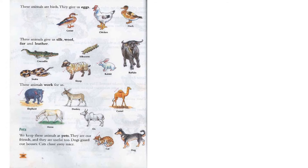Some animals work for us. In this picture, the elephant, donkey, camel, horse, and ox are used in our working procedures. If you want to do some kind of heavy work, we use the elephant, donkey, camel, horse, or ox. We also keep some animals as pets — they are our friends and are useful too. Dogs guard our houses, and cats chase away mice. We keep animals like cats and dogs at home as pets.